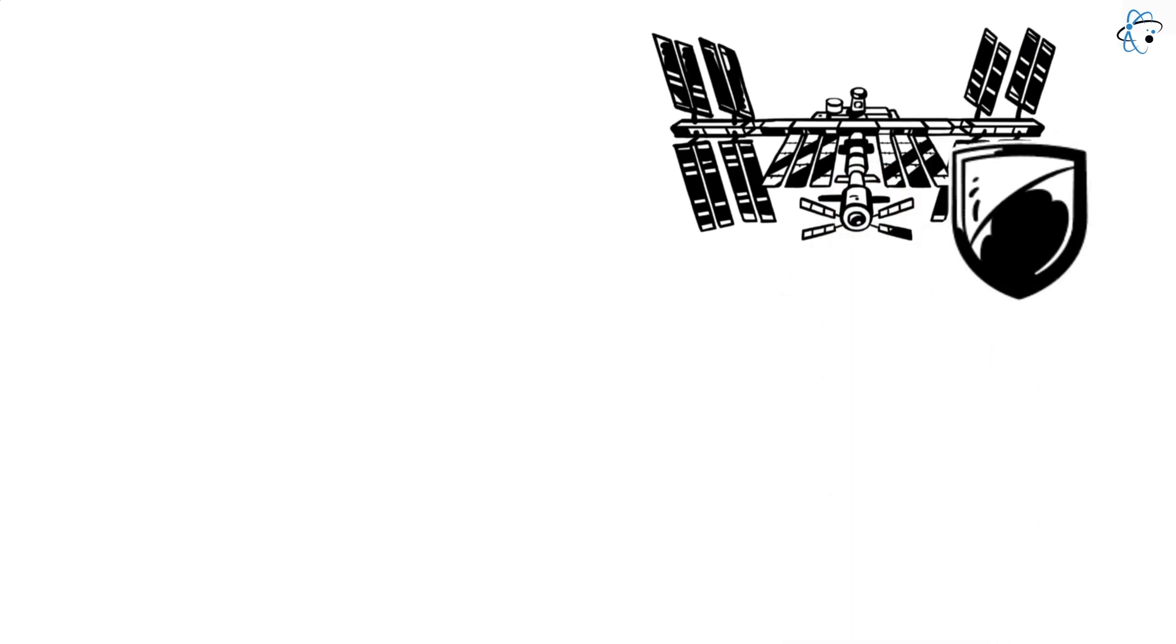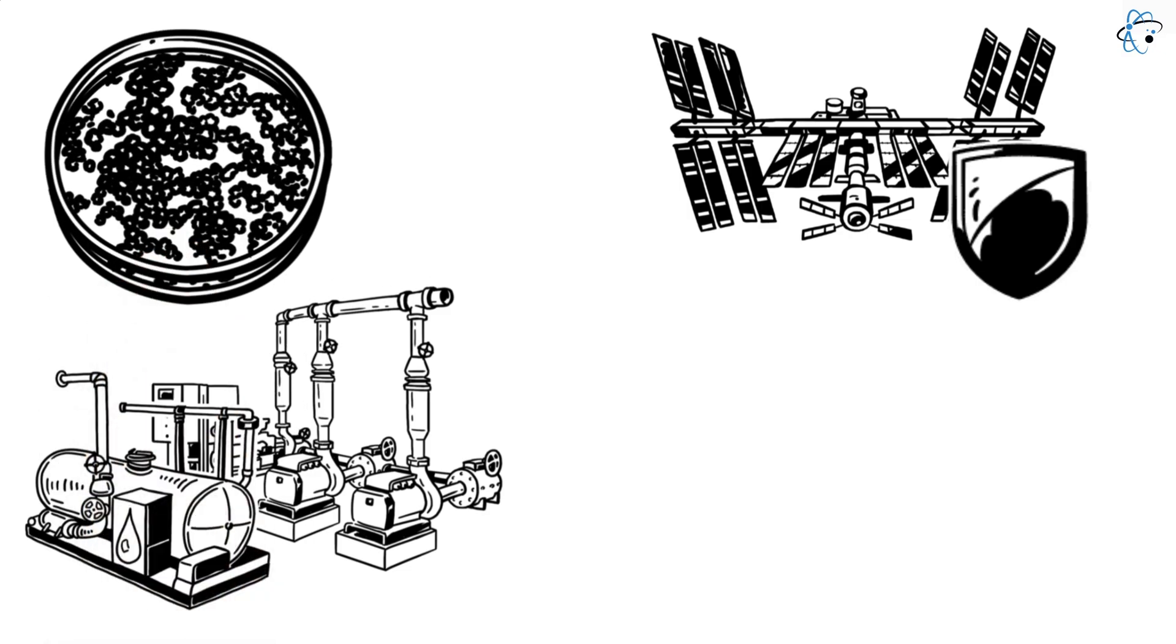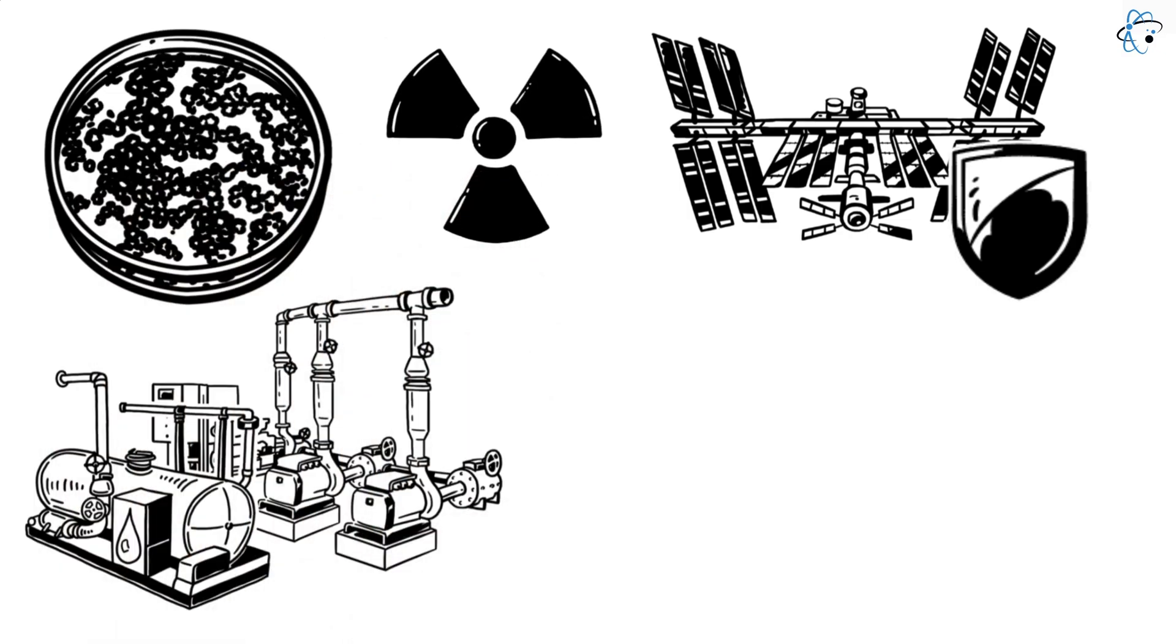The International Space Station already hosts bacteria aiding astronauts in water purification. In bioreactors, yeast fungi convert carbon dioxide into oxygen, and special extremophile microorganisms thrive even under cosmic radiation. They could potentially support settlements on Mars.